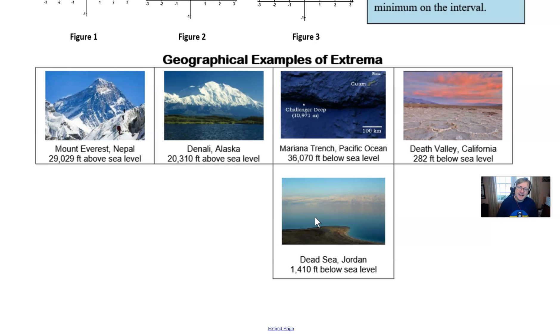but then in the United States we have a very low point in California called Death Valley that's 282 feet below the sea level. So Death Valley would be like the local or relative minimum and the Mariana Trench or the Dead Sea depending on how you want to view it could be the global minimum.